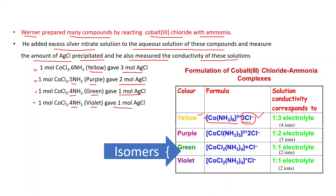In the same way, in the purple color compound, the part in the square bracket does not dissociate, and the 2 chloride ions outside dissociate in water, giving a precipitate of 2 mol of AgCl when AgNO3 is added. For the green and violet color compounds, which have the same formula and are therefore isomers, adding silver nitrate to 1 mol gives a precipitate of 1 mol of AgCl in both cases.